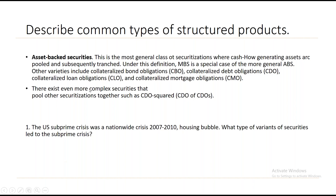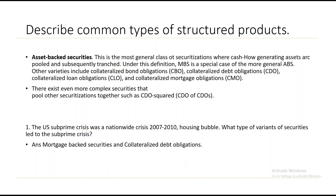The recent US subprime crisis (2007–2010) involved a nationwide housing bubble. The two major types of securities that played an important role in this crisis were mortgage-backed securities and collateralized debt obligations.